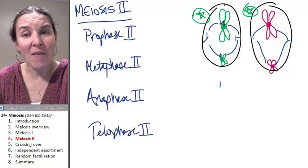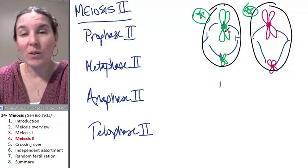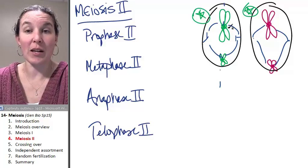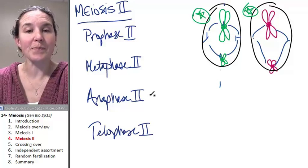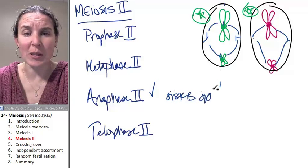So we only have one, it's a haploid cell, but everybody lines up in a line. Nobody is partnered up with anybody except for the sister chromatid. Anaphase II, we just make sure that sisters are splitting.